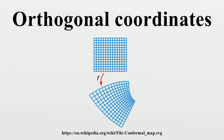Basis vectors: In Cartesian coordinates the basis vectors are fixed, but in the more general setting of curvilinear coordinates, a point in space is specified by the coordinates, and at every such point there is bound a set of basis vectors which generally are not constant. This is the essence of curvilinear coordinates in general and is a very important concept. What distinguishes orthogonal coordinates is that, though the basis vectors vary, they are always orthogonal with respect to each other. A curve is obtained by fixing all but one coordinate; the unfixed coordinate is varied as in a parametric curve, and the derivative of the curve with respect to the parameter is the basis vector for that coordinate.